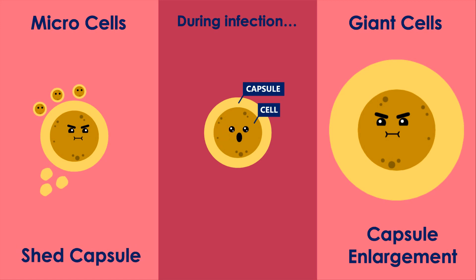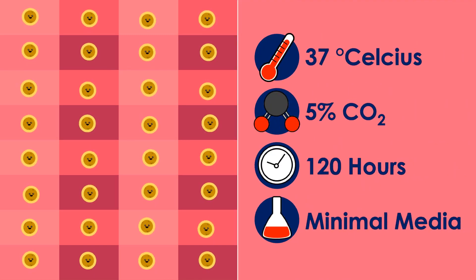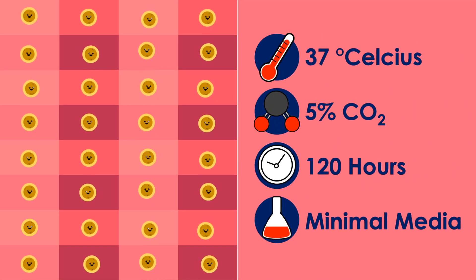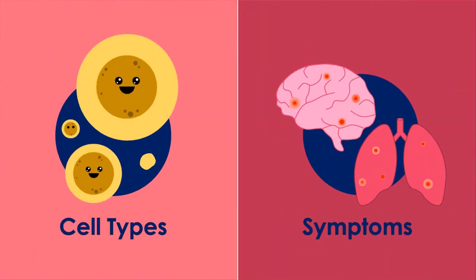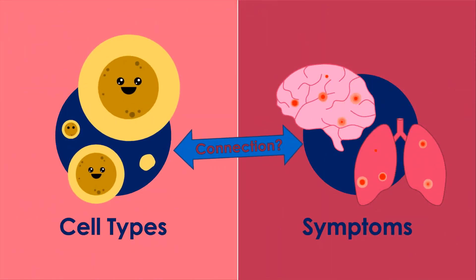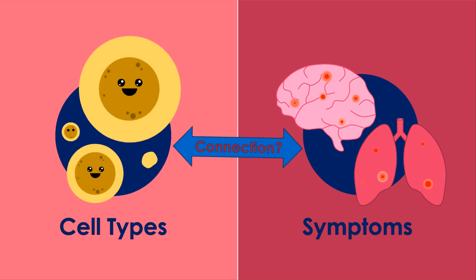To investigate this, I took 70 clinical isolates recently taken from patients, grew them in the lab under specific conditions, and looked for connections between the cell types they produced and clinical symptoms in the patients.